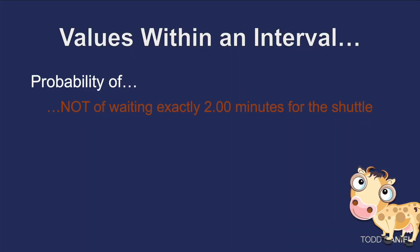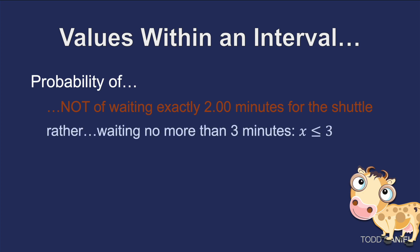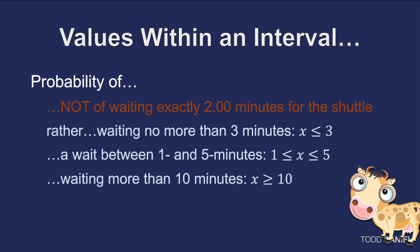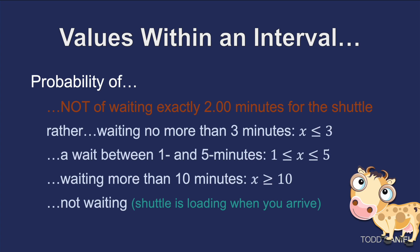We are not interested in the probability of waiting exactly two minutes. Rather, we want to know the probability of waiting no more than three minutes (x ≤ 3), or a wait between one and five minutes, or — because you know you could walk to your destination in less than 10 minutes — what is the probability of having to wait more than 10 minutes? If that probability is high, perhaps you decide to walk instead. Or even better: what's the probability of not having to wait at all, that the shuttle is already there when you arrive? These are the kinds of questions we answer with a continuous probability distribution.